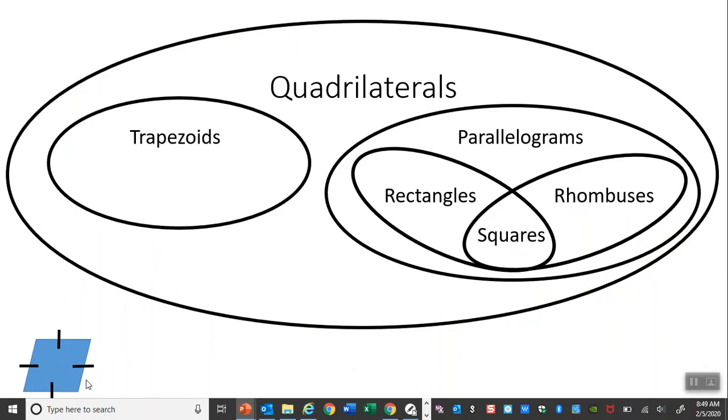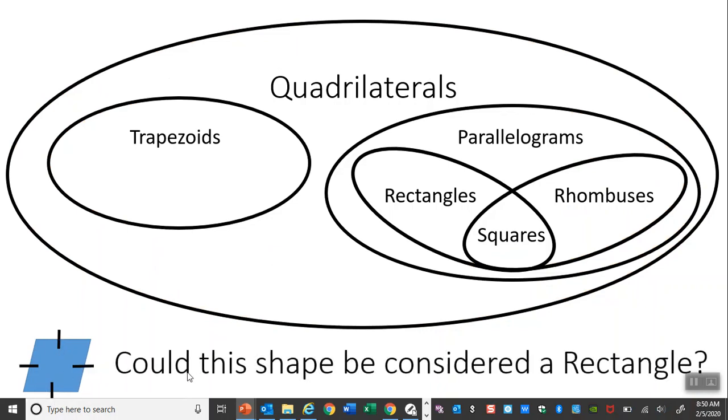This shape here. Hopefully you know these little markings mean that all the sides are congruent. This would be considered a rhombus. Is it going to be considered a rectangle? Well, let's slide it over here. And rectangles is over here. It's not going to work. And guys, you need to understand that it would have to have 90 degree angles to join the rectangle party. If it had 90 degrees, it would turn into a square, and then it could also be a rectangle.